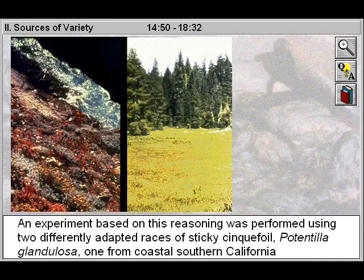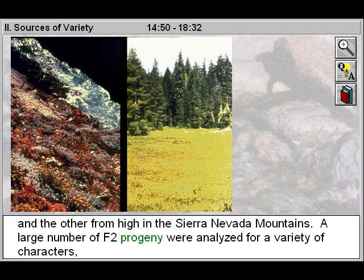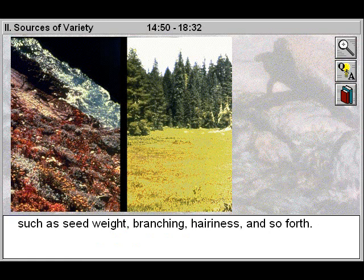An experiment based on this reasoning was performed using two differently adapted races of sticky zinc foil, Potentilla glandulosa, one from coastal Southern California and the other from high in the Sierra Nevada mountains. A large number of F2 progeny were analyzed for a variety of characters such as seed weight, branching, hairiness, and so forth.